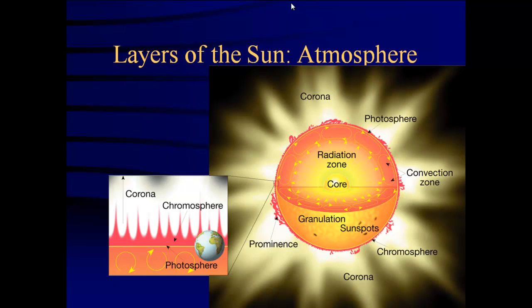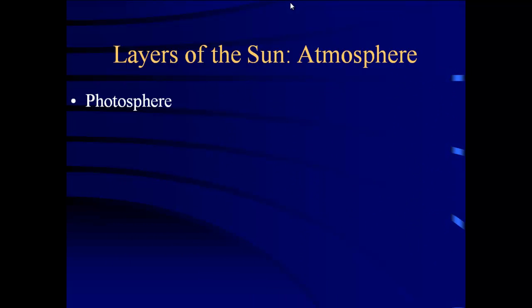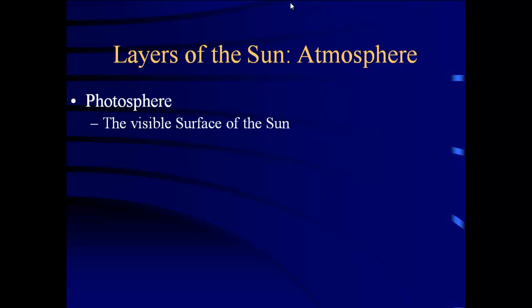The next layer is the photosphere — the part we actually see. In a few days I'll bring in a telescope and we'll look at the surface of the sun; sometimes you can see features like sunspots, granulation, or things coming off the surface. The photosphere is basically the visible surface — this is where light from the sun leaves and travels through its atmosphere to us.